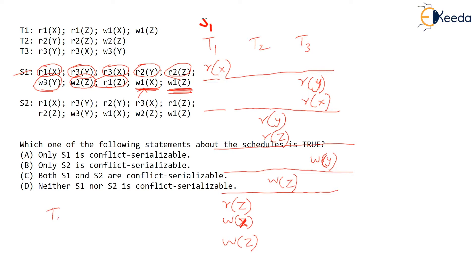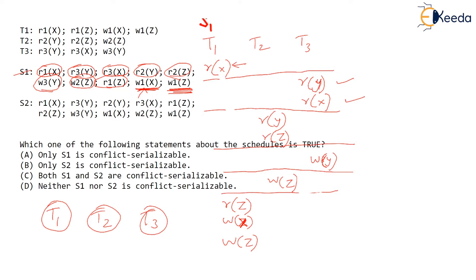Now let's represent T1, T2, T3 as nodes in a precedence graph. Look at the first instruction RX in T1. This does not conflict with anything in T3. It would conflict with a write X, but neither T2 nor T3 is writing X, so this instruction does not conflict with any other operation.